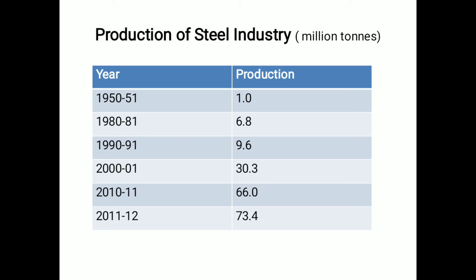The production of the steel industry in million tons can be explained with the following table. In 1950-51, total production was 1 million ton, which rose to 6.8 million tons in 1980-81, then to 9.6 million tons in 1990-91. By 2011-12, the production of steel had risen to 73.4 million tons.